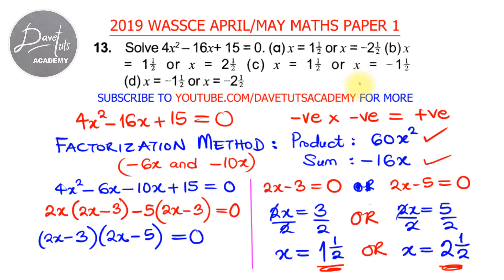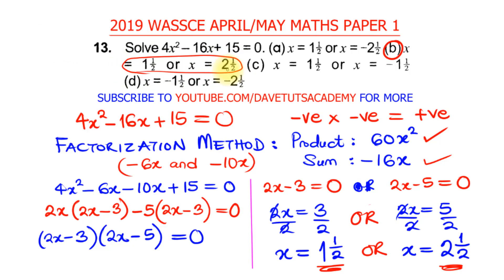So the answer is x equals 1½ or x equals 2½. Looking at the options, option B states 1½ or 2½, which is the solution to this question.